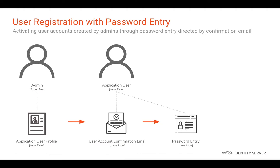WSO2 Identity Server enables activating user accounts via password entry. In this approach, an administrator will first create a user account in the system, upon which a confirmation link will be emailed to the user's registered email ID. Once the user clicks on the confirmation link, the user will be taken to a screen prompting them to enter a password. Once the user enters the correct password, the user account will be activated.